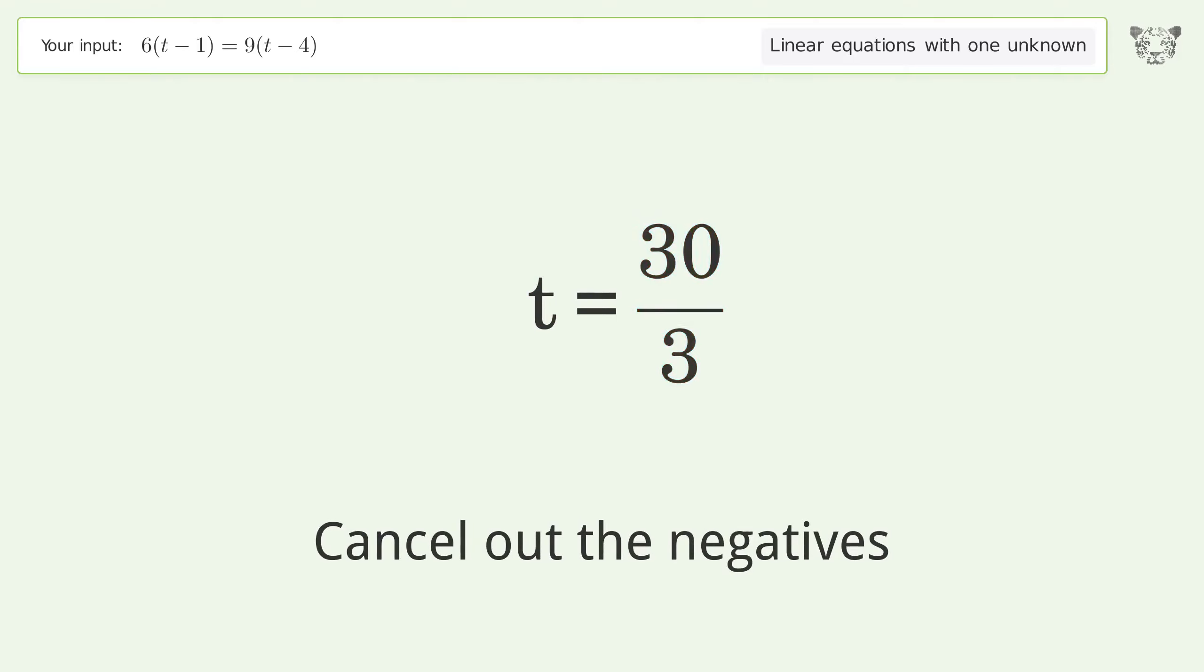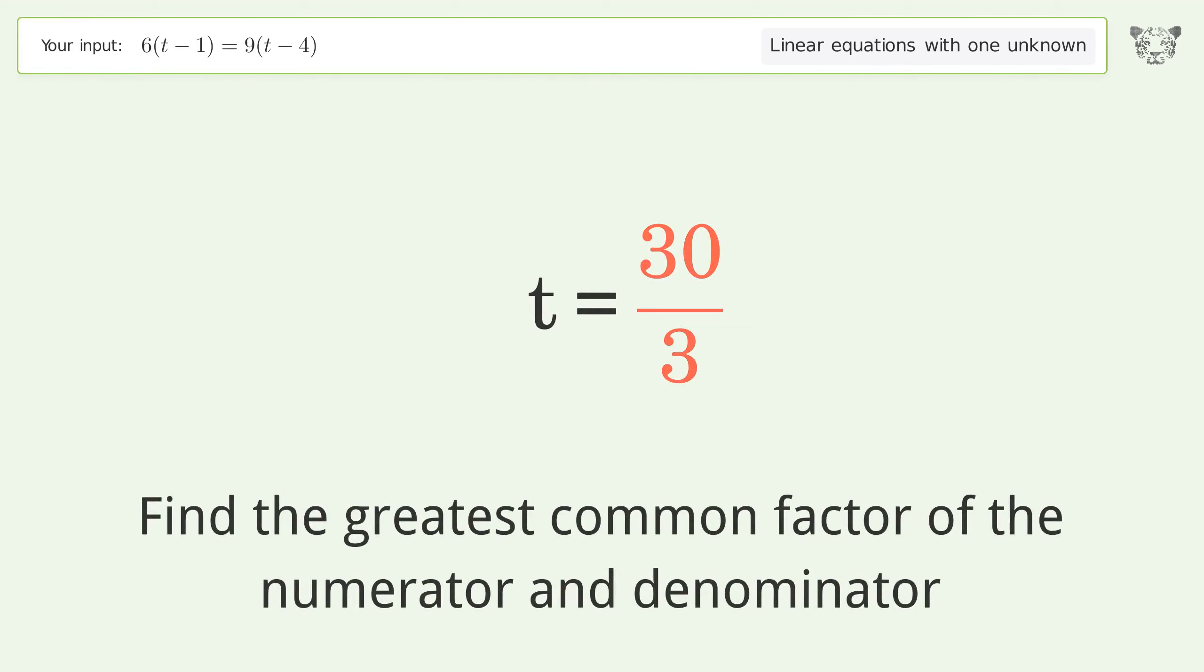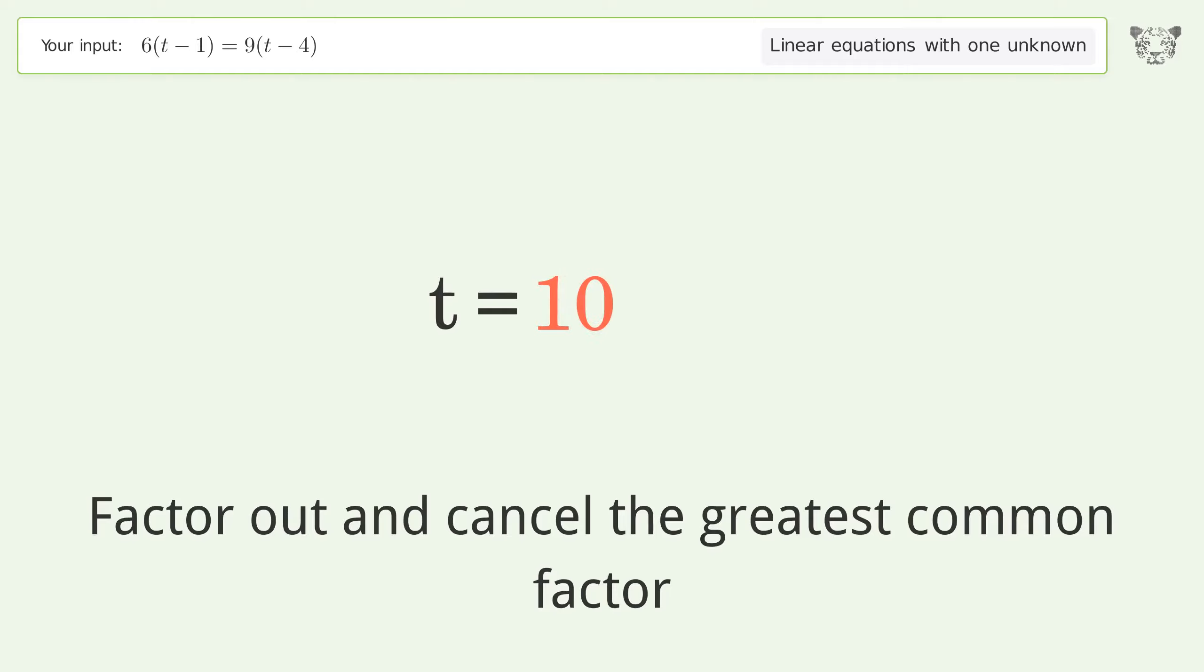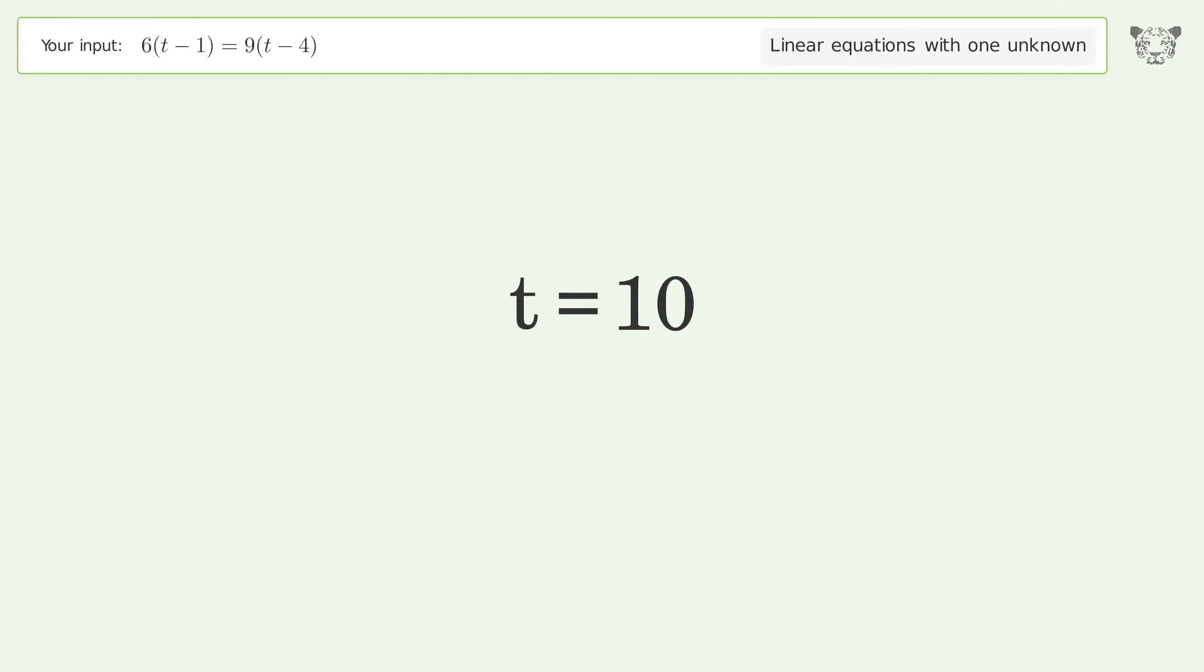You ask Tiger to solve this, which deals with linear equations with one unknown. The final result is t equals 10. Let's solve it step by step. Simplify the expression and expand the parentheses.